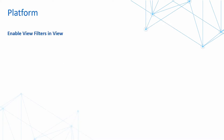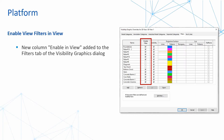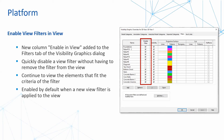Another platform change is the ability to enable view filters in a view. A new column called 'Enable' has been added to the filters tab on the Visibility/Graphics dialog box. This allows you to quickly disable a view filter without having to remove the filter from the view entirely. You can continue to work with elements that fit the criteria of the filter, and the filter is enabled by default when a new view filter is applied — so you can toggle visibility and enable filter on and off.